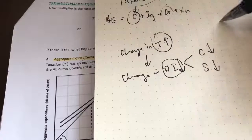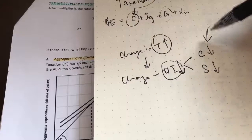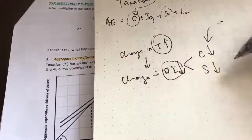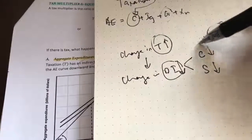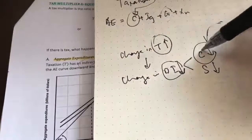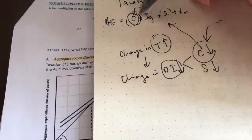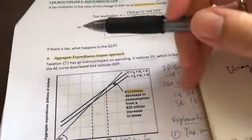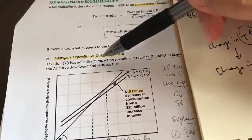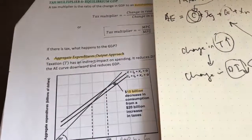Go back to the video in topic four if you don't understand how this relationship works. This C here is a component of the aggregate expenditure. So this is what it means by taxation having an indirect impact on spending — it will reduce disposable income and it will reduce C.